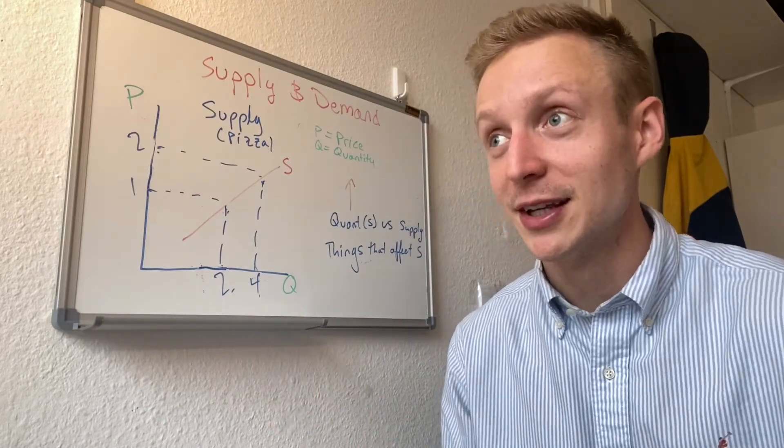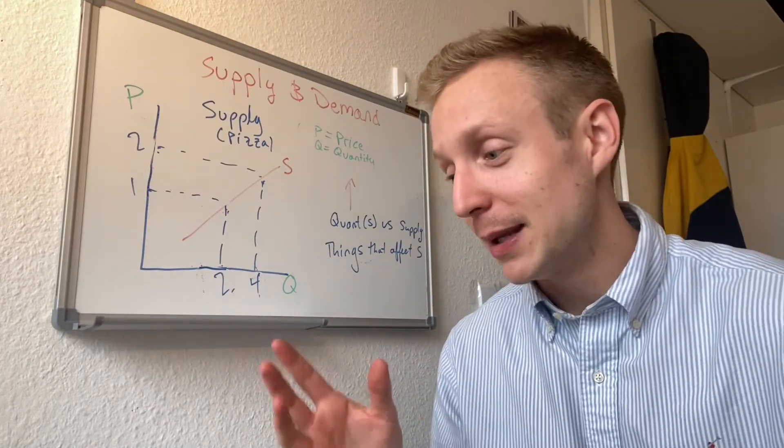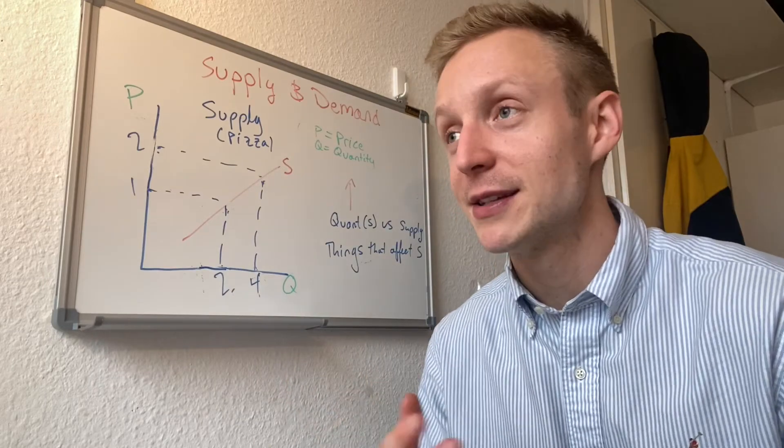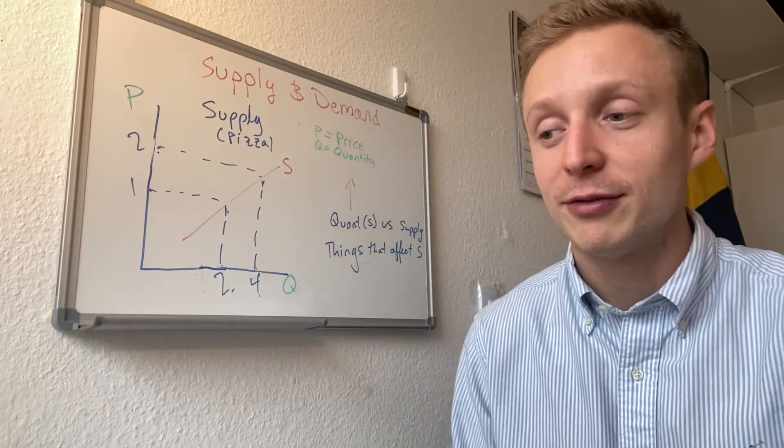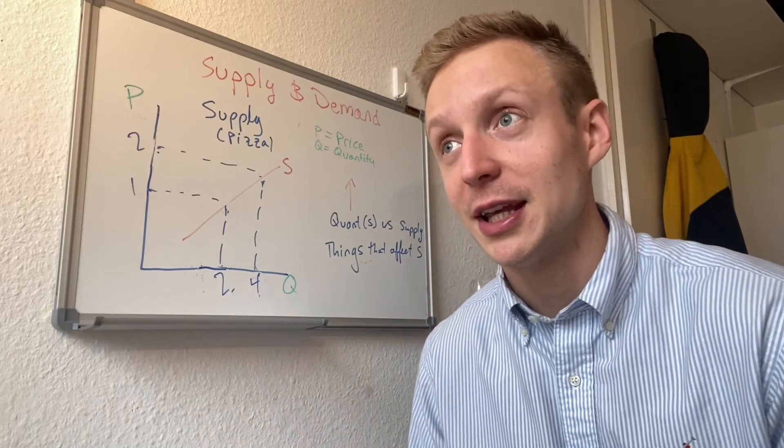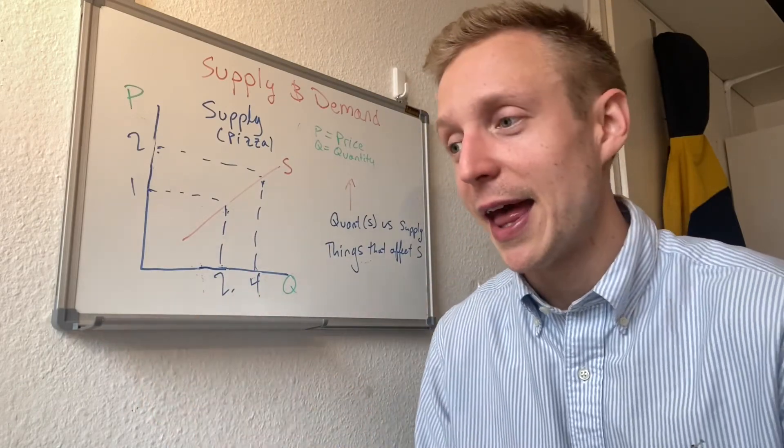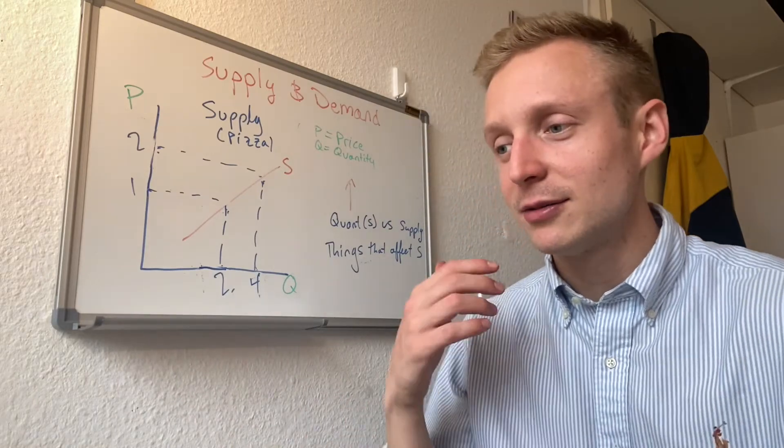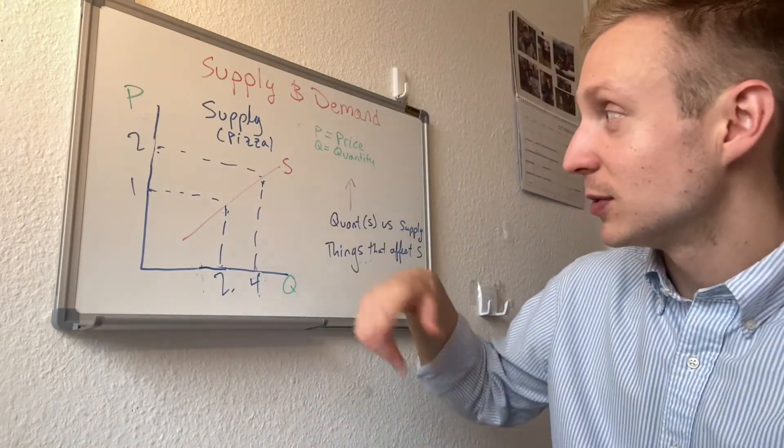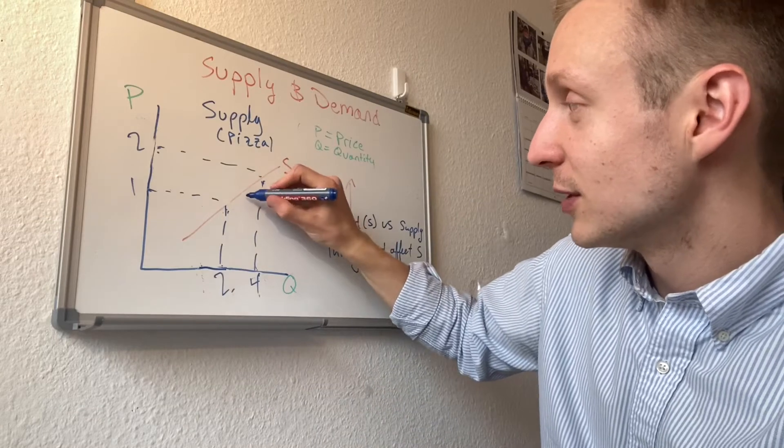And what factors affect supply? Well, price of inputs. If it becomes really expensive to make pizza, tomato shortage, maybe we'll stop making so much pizza and make more hamburgers. Or if a substitute becomes really expensive and I can sell that substitute, such as hamburgers, and make a lot of money, maybe I'll sell more hamburgers and sell less pizza, which would decrease supply.